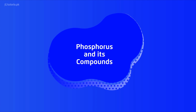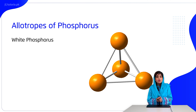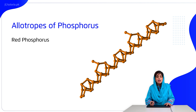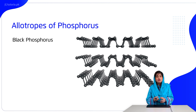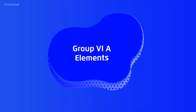Moving to phosphorus and its important compounds: allotropic forms of phosphorus include white phosphorus, which is a tetra-atomic molecule and most reactive; red phosphorus, which is less reactive and exists as a macromolecule; and black phosphorus, formed by pressurizing and heating red phosphorus at high temperature — it is the most inert and most stable allotropic form of phosphorus.